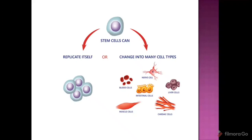Stem cells can differentiate into various cell types: blood cells, intestinal cells, liver cells, muscle cells, and cardiac cells. In all these types of cells, you can convert from a stem cell.